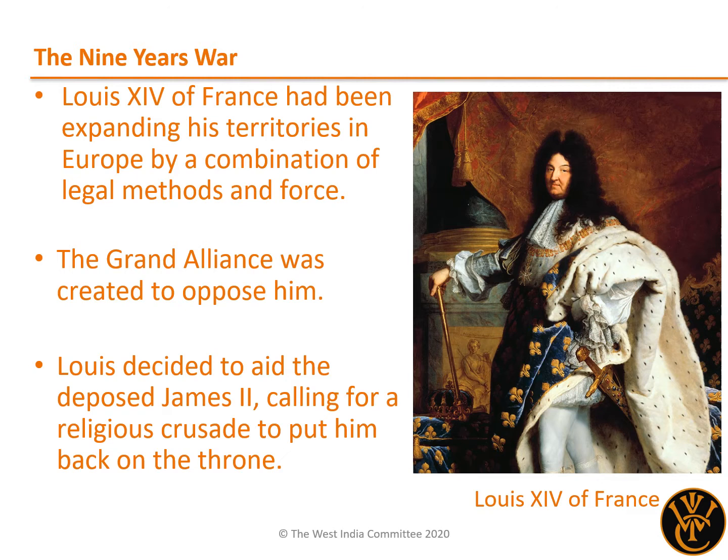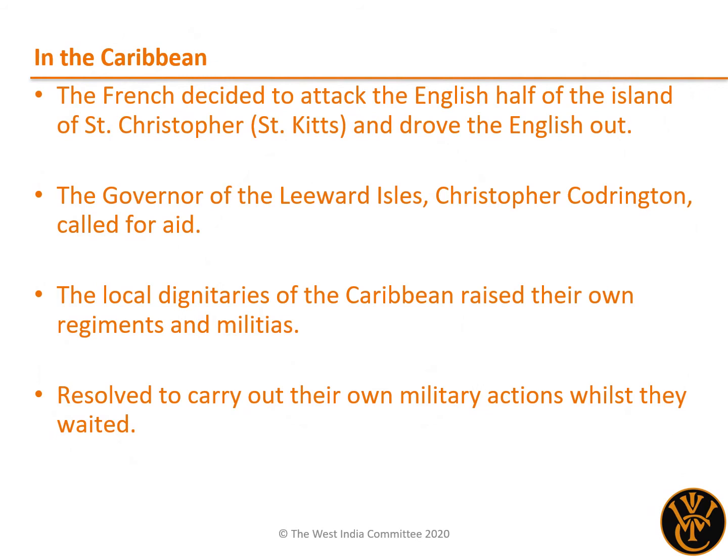Louis tried to disrupt the English war effort by giving aid to the deposed James II to reclaim the throne, which led to conflict in Ireland. He even tried unsuccessfully to incite a religious crusade to unite the Catholic nations of Europe to return James to the throne. As on many other occasions throughout history, the war in Europe spread also to the colonies in the Caribbean.